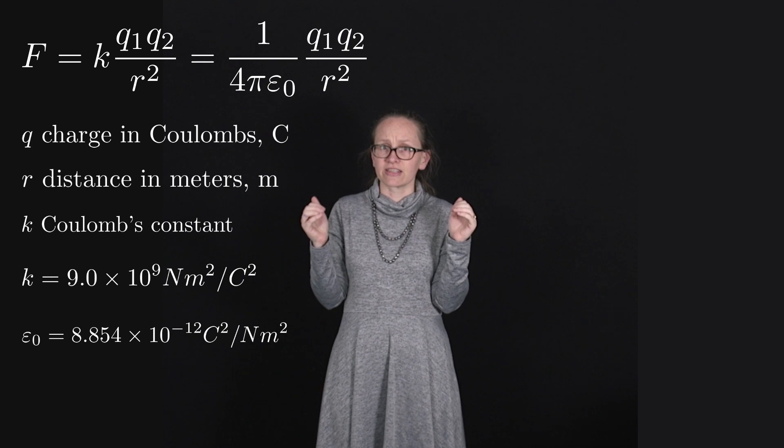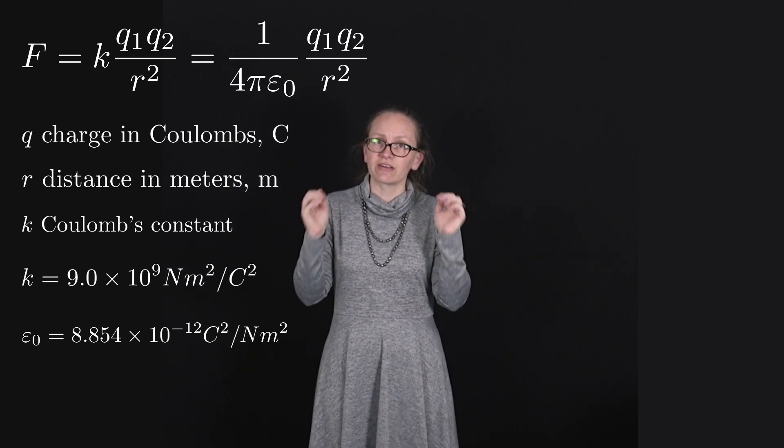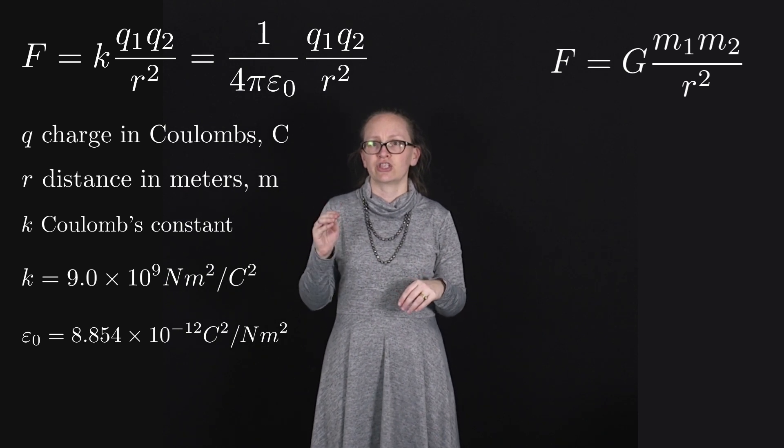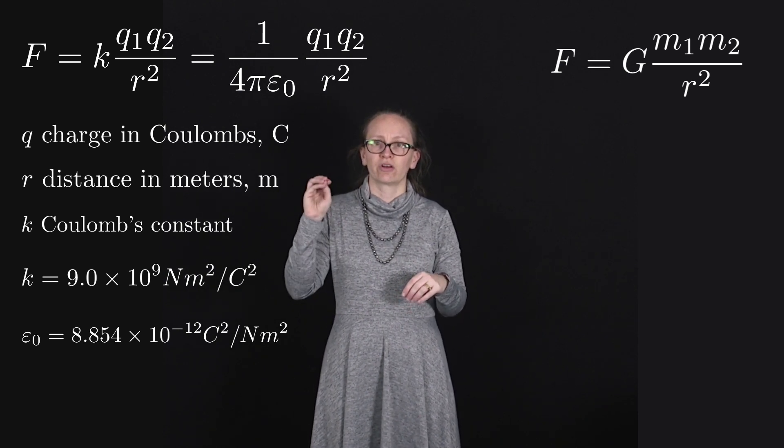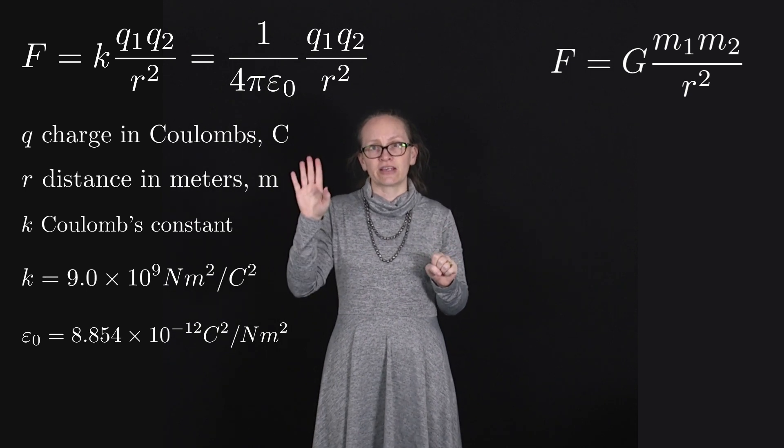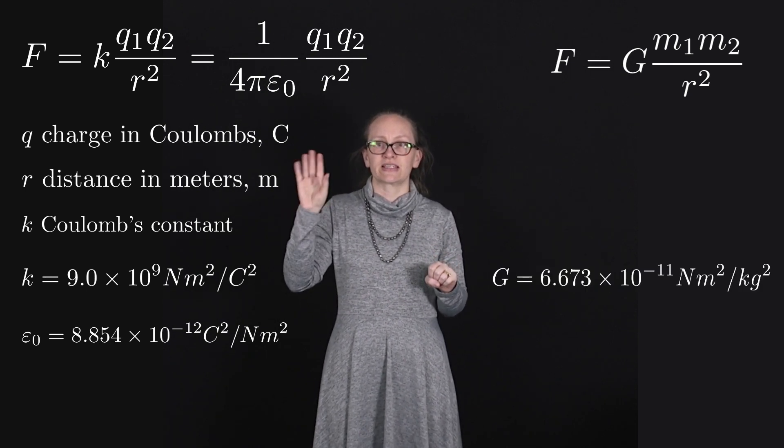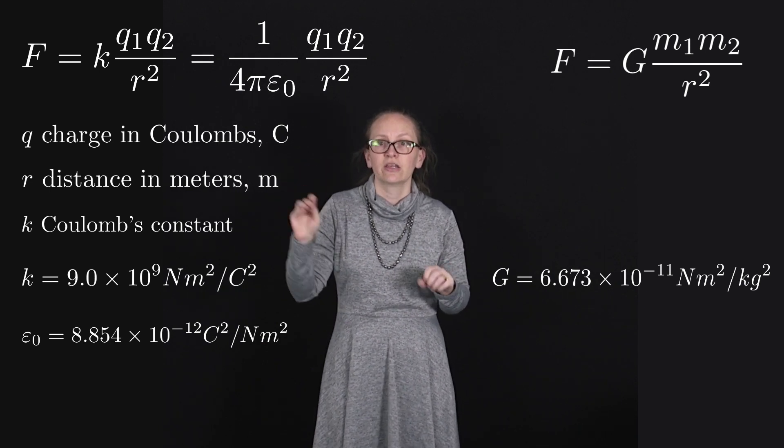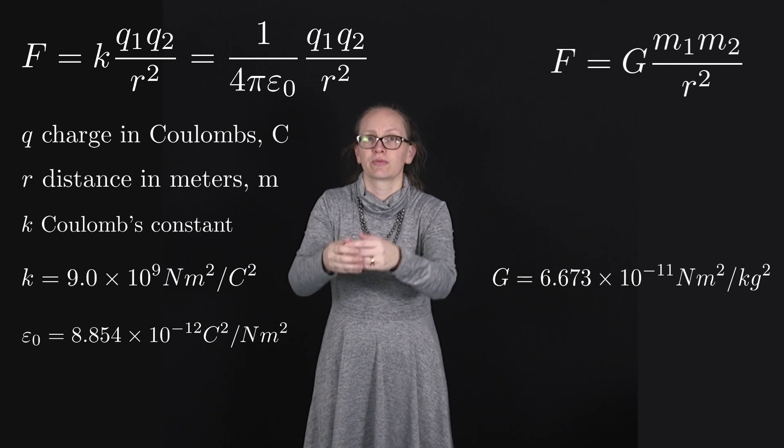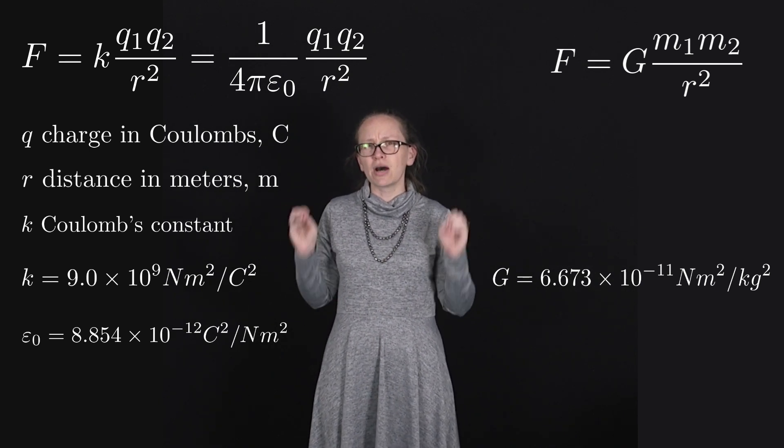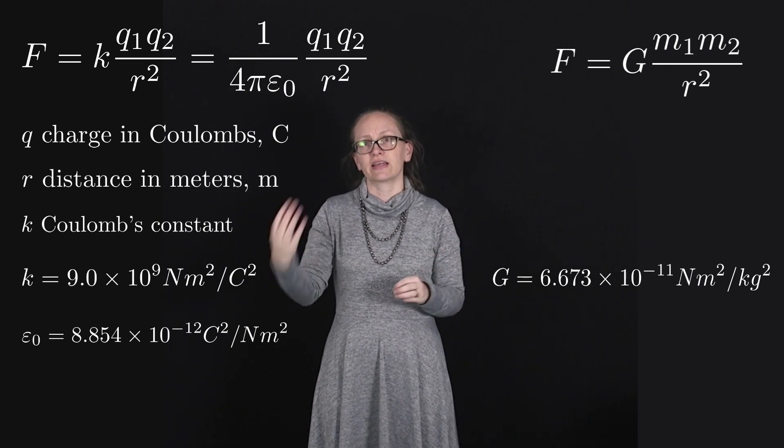Now you'll notice that the form of this equation is very very similar to Newton's law of gravitation which can be written as F equals G m1 m2 on R squared but in this case the gravitational constant is equal to 6.673 times 10 to the minus 11 newton meters squared per kilogram squared. So this is a much much smaller number. So the gravitational force is in fact much much smaller than the electric force.